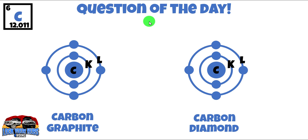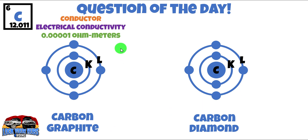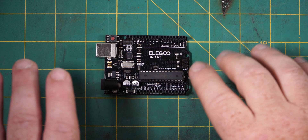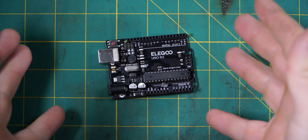And now the question of the day — first person to answer correctly in the comment section, I'll send you a sticker anywhere in the world. A carbon atom has an atomic number of six, so it has four electrons in its outermost valence shell. Now graphite is a very good conductor — one one-hundred-thousandth ohm-meters. But carbon in its diamond configuration is a horrendous conductor — in fact it's a very good insulator at ten quadrillion ohm-meters. Why is that? Drop the answer in the comments below. If you got some value from this episode, give it a thumbs up. Thanks guys, we'll see you in the next one.